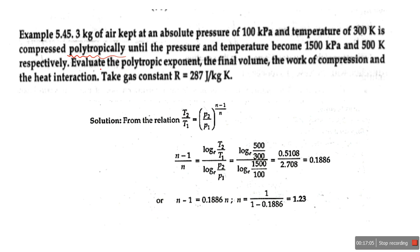The given data: mass = 3 kg of air, initial pressure P1 and initial temperature T1. During compression, the final pressure P2 and final temperature T2 are to be found — temperature and pressure both increase during compression. The final pressure is 1500 kPa. We need to find the polytropic exponent N, final volume V2, work of compression, and heat interaction. The gas constant R is given, so there is no need to calculate CV separately upfront.